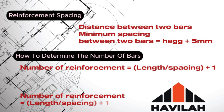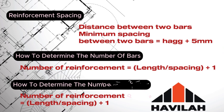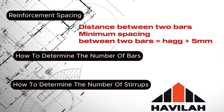The spacing of reinforcement is the distance between two bars. As suggested by the code of practice, it is determined as the height or thickness of your aggregate plus 5 millimeters. To obtain the number of bars, the length of your member is divided by the spacing, plus one — which accounts for both sides of your arrangement.